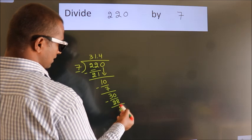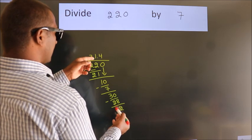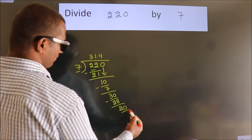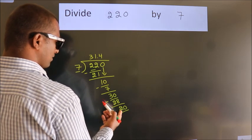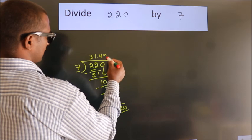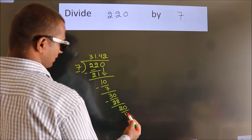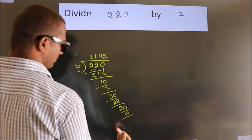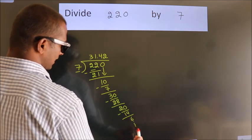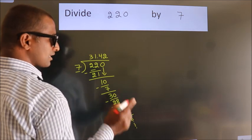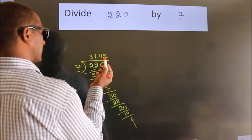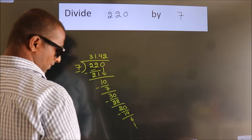After this, we already have the decimal, so directly take 0, making 20. A number close to 20 in the 7 times table is 7 twos, 14. Now we subtract and we get 6. The division continues, but it is enough if we do up to 2 decimal places.